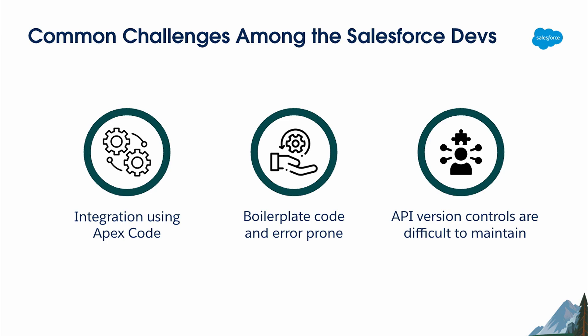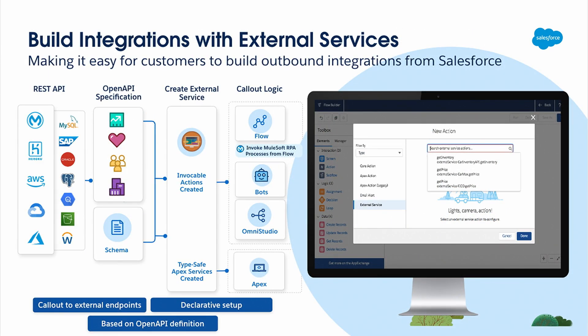That's where External Services comes into play. It helps you to interact with these external APIs faster, easier, and more effectively for both no-code users and pro-code developers. A key concept here: an API specification describes what an API can do, how to consume it, and what the expected response and request structures are. The industry standard for REST-based API specification is called OpenAPI specification.